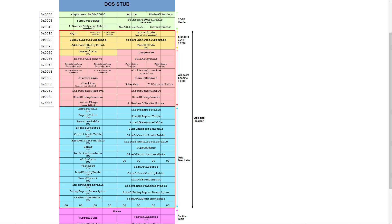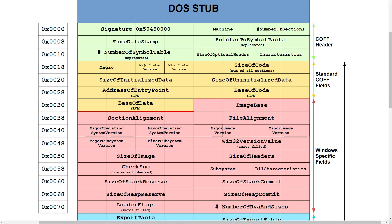After that there is the optional header, which is massive and can be divided into a couple of subsections. The first is the standard COFF fields, in which you can find many useful fields like a magic number specifying the type of PE, a size of code which stores the size of all sections together, the relative virtual address or RVA of the entry point of the program — an RVA being an offset from the start of the file in memory to a location — the base code field holding the RVA of the start of the .text section, and a field specifying the RVA to the start of the data section.